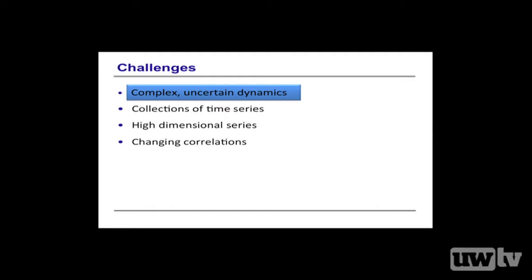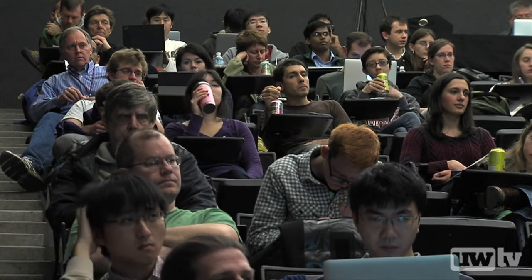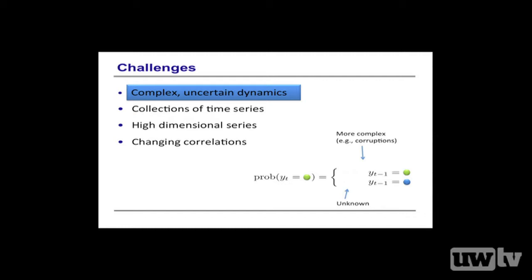Clearly, harnessing temporal structure is useful because we get information not only about each observation at every point in time, but also about how one observation evolves to the next. There are a few challenges when using dynamic models. One is complex uncertain dynamics — typically the parameters associated with our dynamics are unknown, and the dynamic mechanism itself might be much more complicated than a toy example. Later in the talk we'll look at collections of related time series or high-dimensional time series with changing correlations.